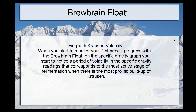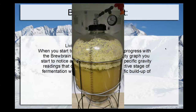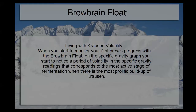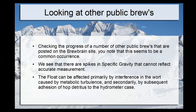Clearly this is happening when we have a lot of volatility in the krausen, and you start to see this in the readings. I think one of the best things we could do would be to check the volatility we see in some other public brews posted on the float site.